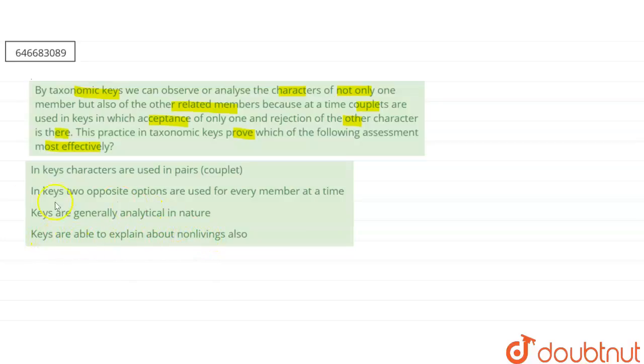So here, if you're talking about our question, firstly if you're talking about our key - key is the example of the taxonomical aid. That means it will help in the taxonomy. This is the example of the taxonomical aid, and basically it is used for plants as well as animals.